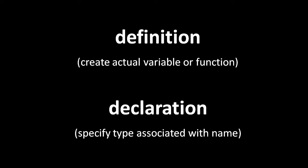Third, in common parlance, the terms are used very sloppily. In particular, it is very common to say variable declaration when we should say variable definition. In fact, I made the same mistake in earlier parts of this video. In any case, the distinction between definition and declaration is that a definition actually creates a variable or function, but a declaration merely states the type associated with a name.